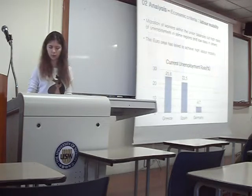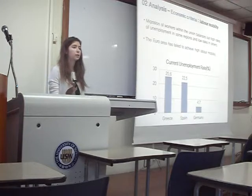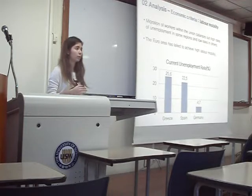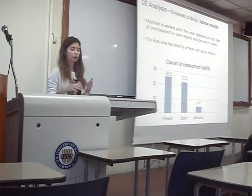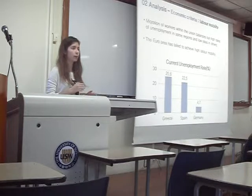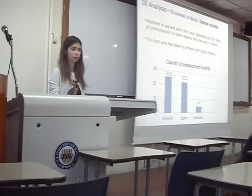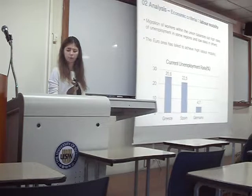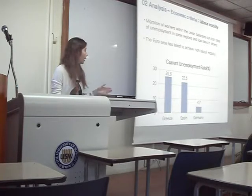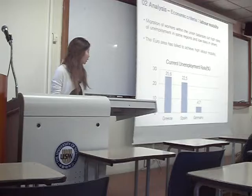I will start from labor mobility. This criterion is supposed to be one of the most important criteria. There should be a high rate of labor mobility among the parts of a currency zone. If labor mobility is high, it will balance out the unemployment rates in different countries of the zone. However, the eurozone has failed to achieve high labor mobility, as you can see on the chart.